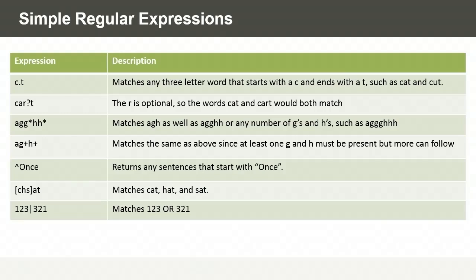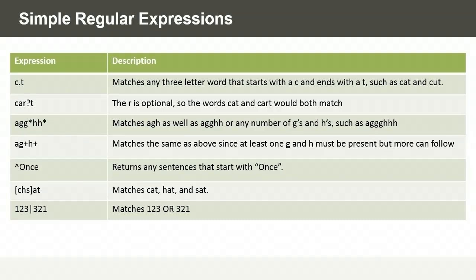Let's take a look at some examples of regular expressions. The first one is c.t — the dot means that we could have any character at that position. So c.t would match text strings such as the word 'cat' as well as the word 'cut'. In our second expression, we have c-a-r question mark t. The question mark means we're matching zero or one occurrence of some character in that position. In other words, the letter r is optional, so that expression would match words like 'cat' as well as 'cart'.